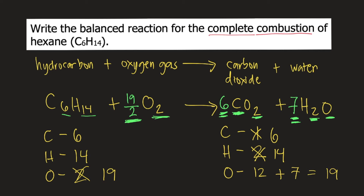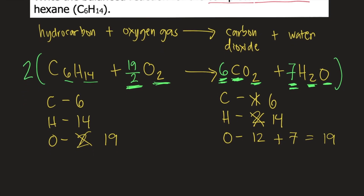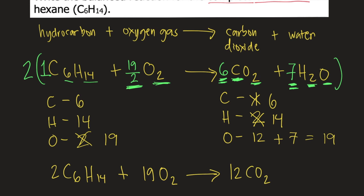However, some professors do not want fractions in a balanced chemical reaction — they want whole numbers. To remove the fraction, you multiply the entire reaction by 2, multiplying the coefficient of each reactant and product. So: 2 times 1 gives 2C6H14; 2 times 19/2 gives 19O2; 2 times 6 gives 12CO2; and 2 times 7 gives 14H2O.